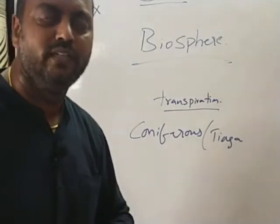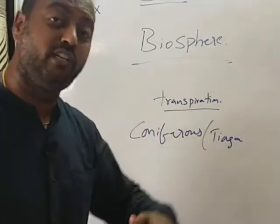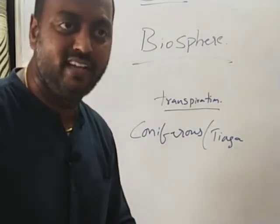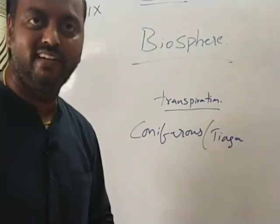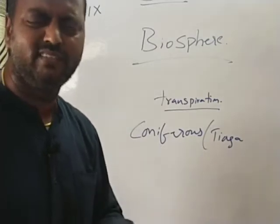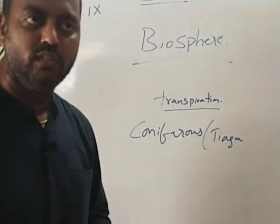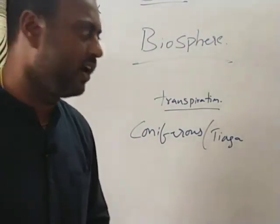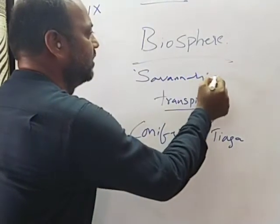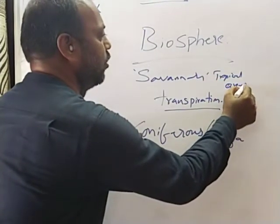Tropical grasslands extend up to the Tropic of Capricorn and Tropic of Cancer. The grasses grow very tall here — about three to four meters. For example, the savannas are the grasslands of Africa, where elephants, zebras, and giraffes can hide in them. Leopards are also found here. The tropical grasslands of Africa are called savannas — this is an important point to remember.